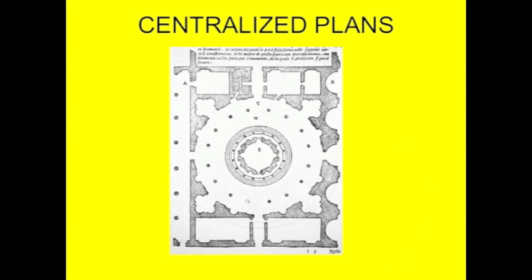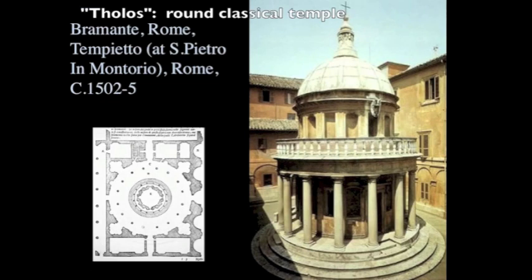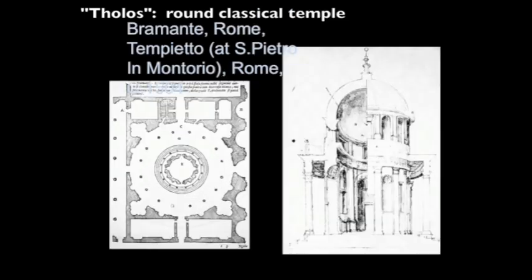Just to backtrack a little bit — we looked at the ideal centralized church and various attempts to build it. This is the Tempietto by Bramante, often thought to be the ideal, super-perfect version of a centralized church. One reason it's so capable of attaining ideality is that it doesn't have much work to do. All it does is mark a point. It doesn't need a congregation or a priest. It's simply marking the spot where St. Peter was crucified, taking the opportunity to look at a Roman precedent — the Tholos, a round temple — and trying to build it as carefully and accurately as possible.